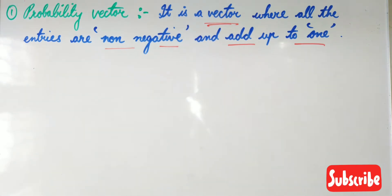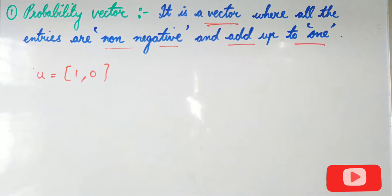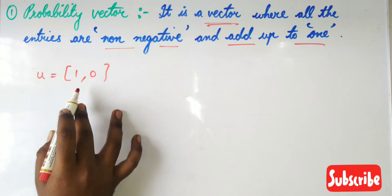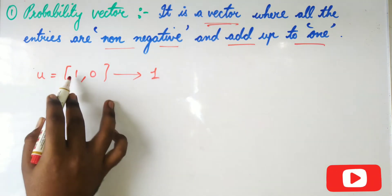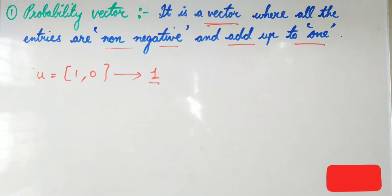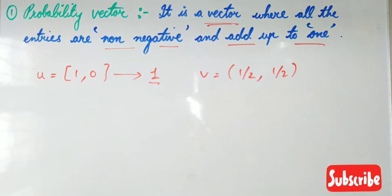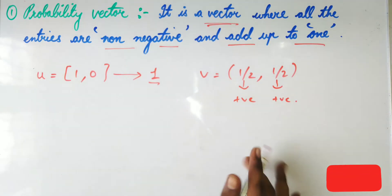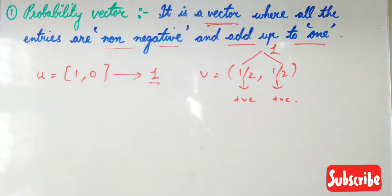Let us understand by taking some examples. Let u = (1, 0). This is a single row where the entries are non-negative — 1 and 0 are positive — and their sum is 1 + 0 = 1. Condition is satisfied, therefore it is a probability vector. Another example: v = (½, ½). The two entries are positive and ½ + ½ = 1, so this is also a probability vector.